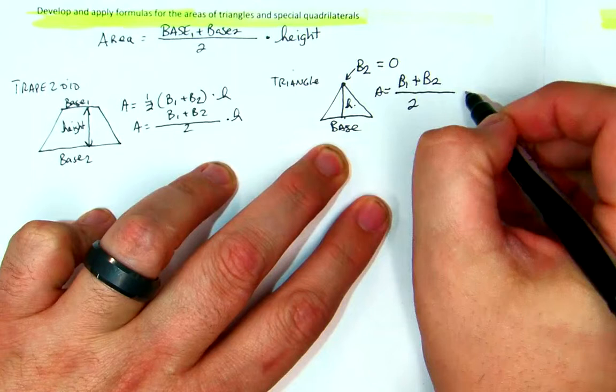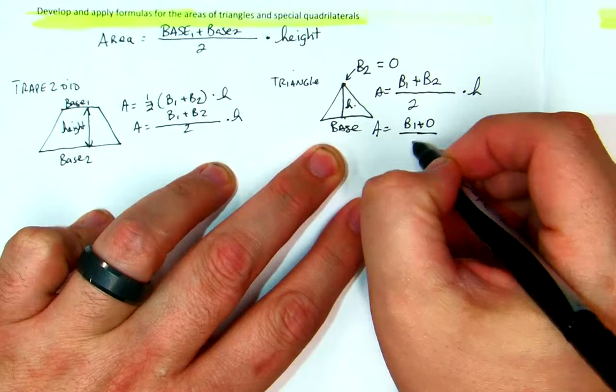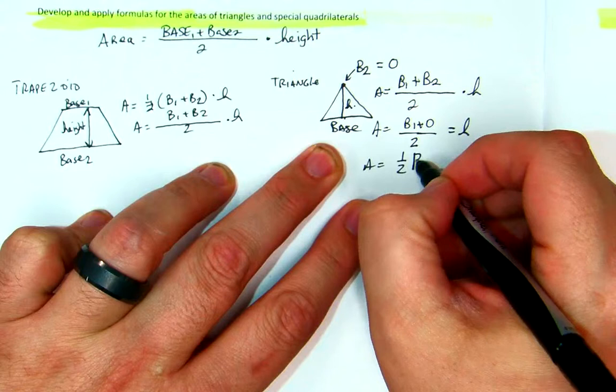So the area would be base 1 plus 0 over 2, which is the height. Area is equal to one half the base times the height, which is what we normally have.